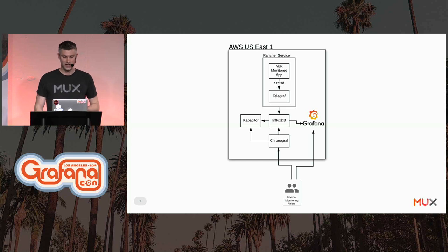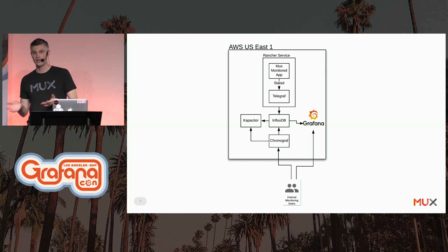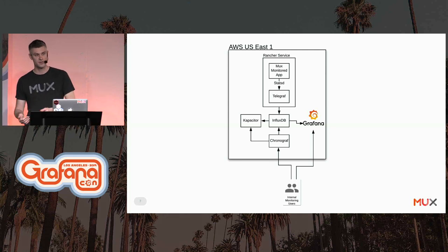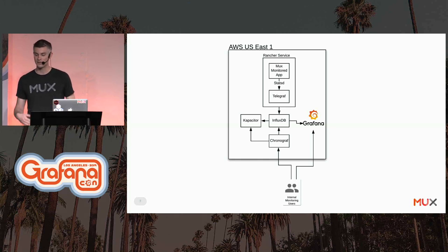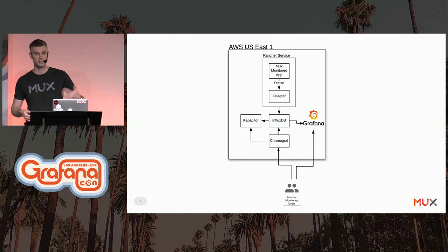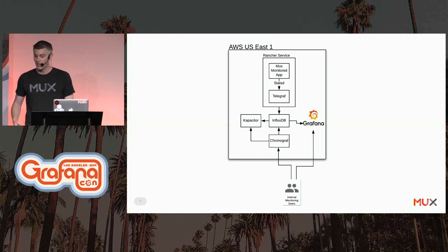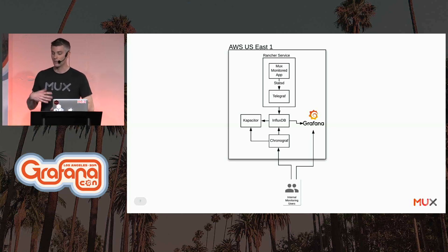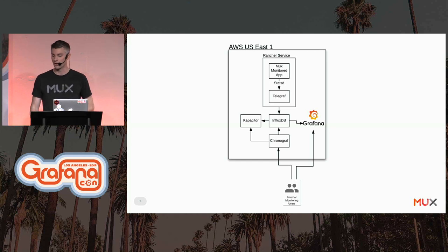This highly simplified diagram shows the setup. We've got our application sending metrics over StatsD to Telegraph. Telegraph consumes those metrics and writes them to InfluxDB. InfluxDB streams the metrics to Kapacitor, and Kapacitor evaluates alerting rules and contacts OpsGenie, which is our paging service. The Kapacitor alerting rules were configured with Chronograf, but all of our internal monitoring dashboards were configured with Grafana.